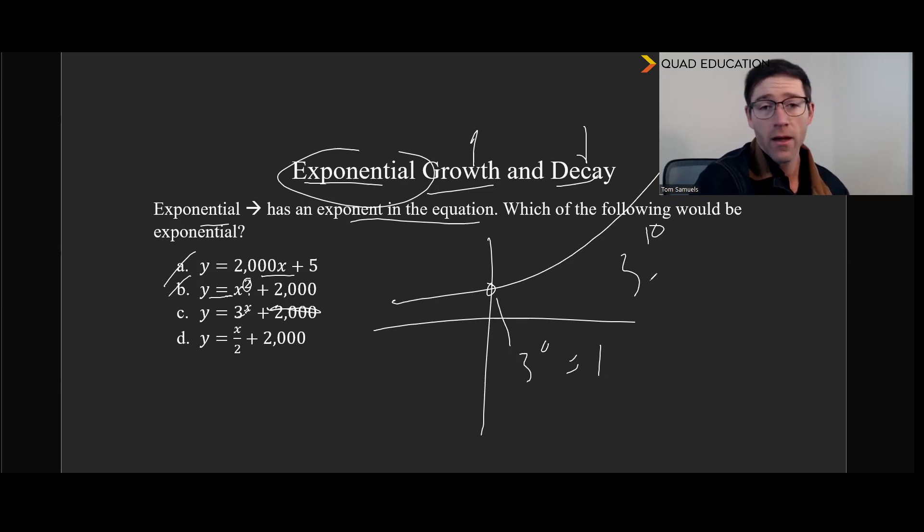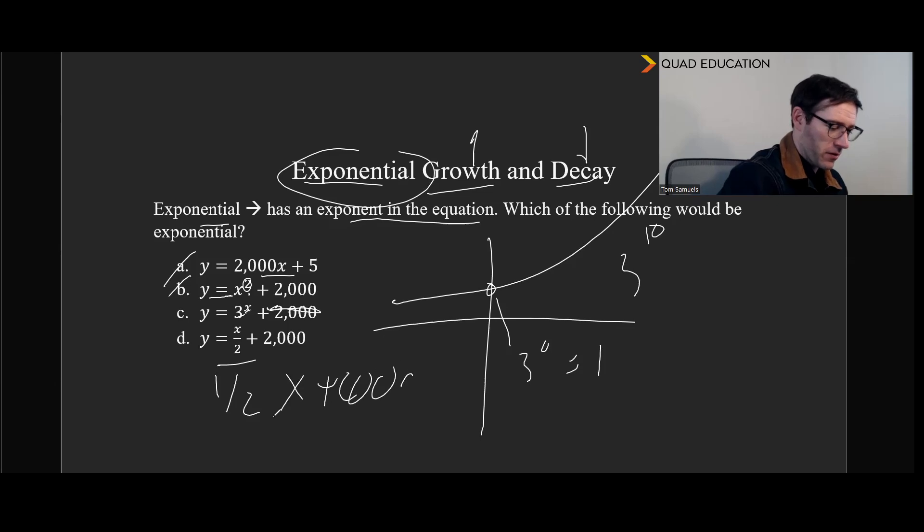Or in the case of decay, very small very quickly. And then here indeed, that's just another linear equation. That's one half X plus 2000, which is also a straight line.